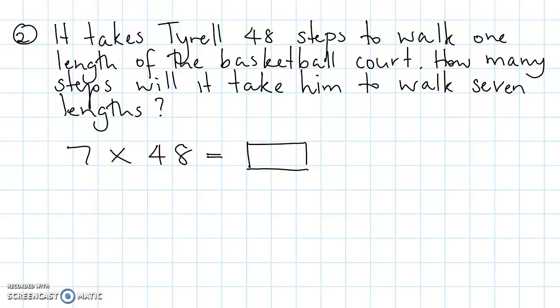Because our learning intention is to use tidy numbers, what is the nearest tidy number to 48? Which is 50. So let's rewrite this again. 7 times 48 equals... nearest tidy number to 48 is 50. 7 times 50.